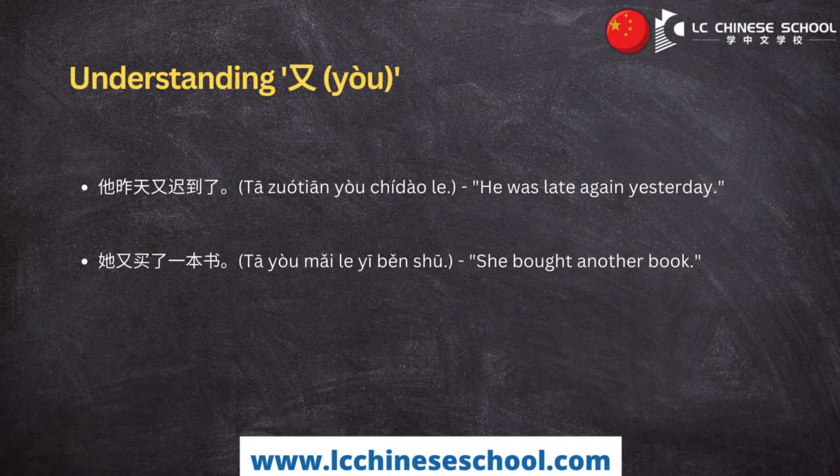For example: 'He was late again yesterday' and 'She bought another book.' In these sentences, 又 points to actions that have been repeated — being late and buying a book — emphasizing the recurrence of an action in the past.